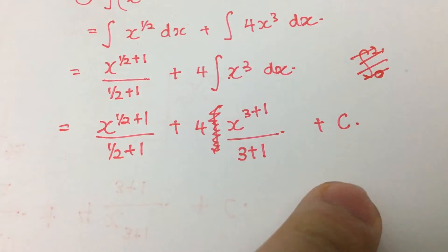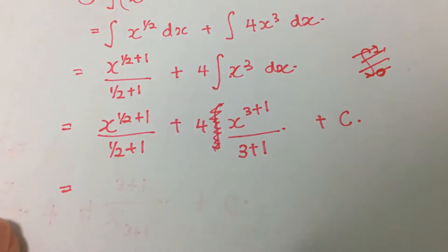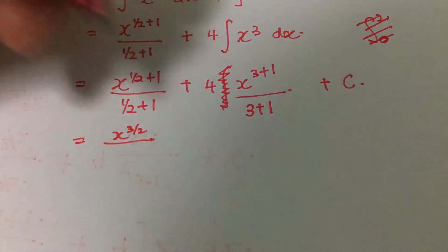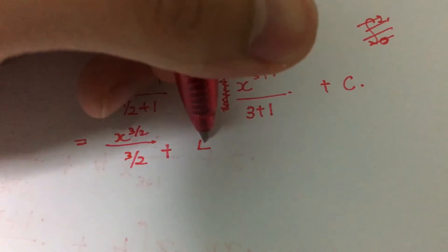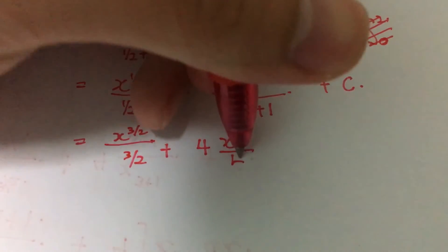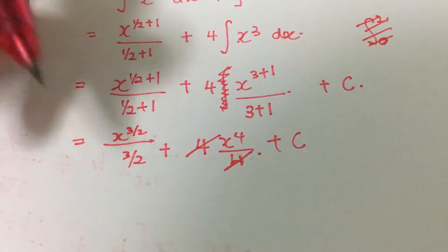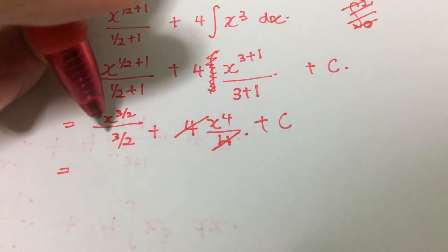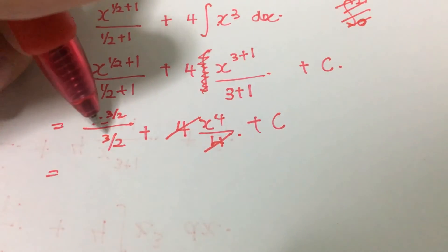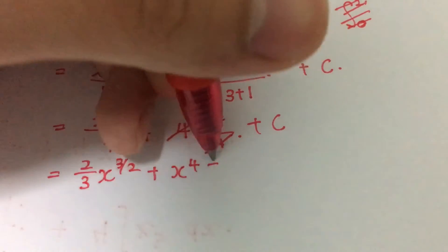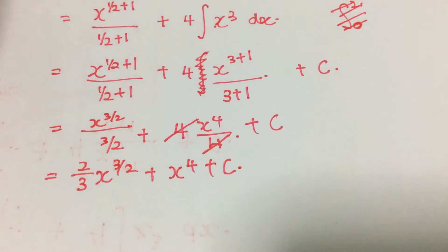This equals x to the power 3 over 2 over 3 over 2 plus 4 x to the power 4 over 4 plus c. We can do the cancellation down here, and we flip this up to the numerator. Anything divided by 3 over 2 becomes 2 over 3, so we get 2 over 3 x to the power 3 over 2 plus x to the power 4 plus c.